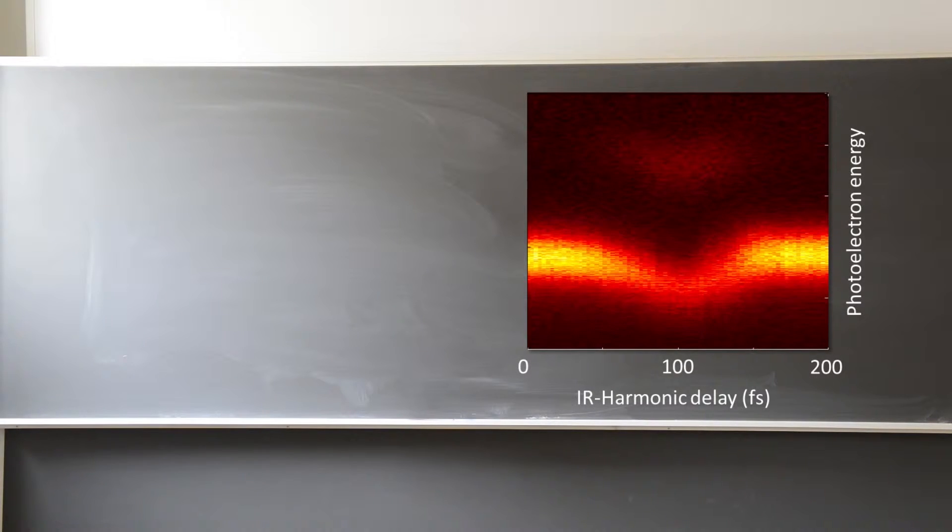In this experiment that you see here, we have ionized an atom using a femtosecond XUV pulse in the presence of a rather strong IR field. What you see is the energy of the electron coming out. When the two femtosecond pulses overlap, the final energy of the electron is actually reduced by the ponderomotive energy.